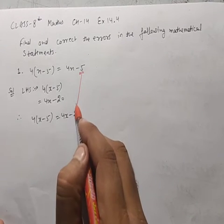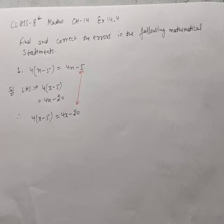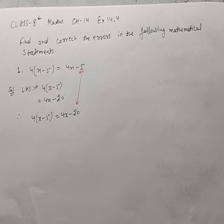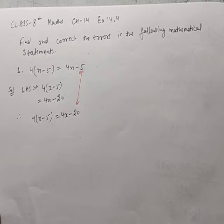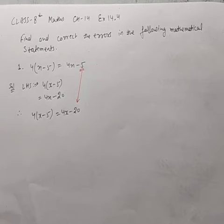The correction is: 4(x-5) = 4x-20. You can verify by sub-equations. The error check confirms: after correcting, both sides match. The correct statement is 4(x-5) = 4x-20.